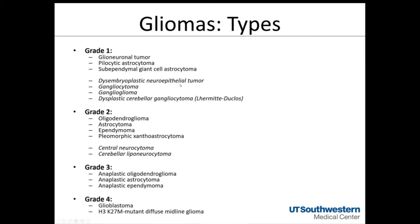Other grade one tumors in the differential that are not strictly gliomas include DNETs (dysembryoplastic neuroepithelial tumors), which often present with seizures; gangliocytomas, which have neuronal components; gangliogliomas, with mixed neuronal and glial components; and dysplastic cerebellar gangliocytoma, also known as Lhermitte-Duclos disease. This predominantly hamartomatous lesion arises in patients with PTEN mutations. A somatic PTEN mutation gives Lhermitte-Duclos; a germline mutation gives Cowden syndrome with CNS gangliocytomas.